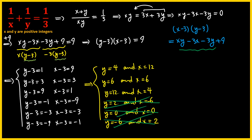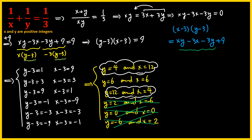Since x and y are in the denominator, they can never equal zero. So we have only three valid pairs of solutions. Looking at (4, 12) and (12, 4), they are essentially the same thing because x and y are interchangeable in this particular equation.